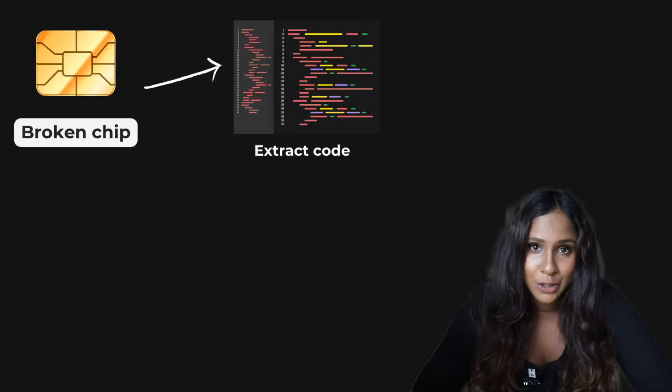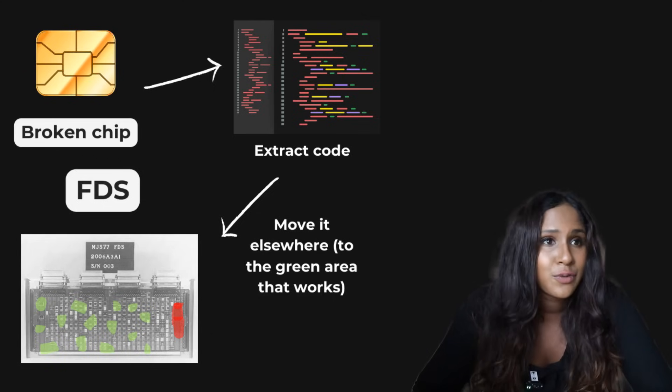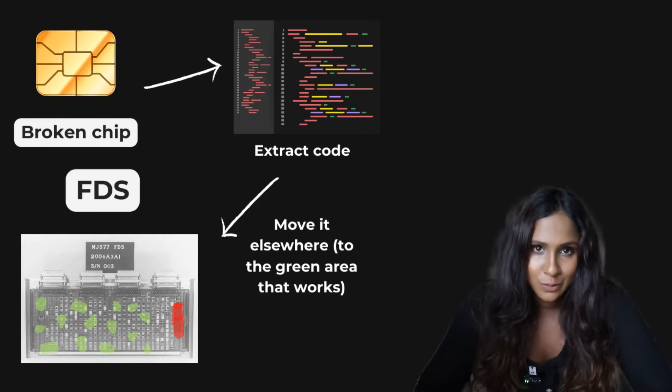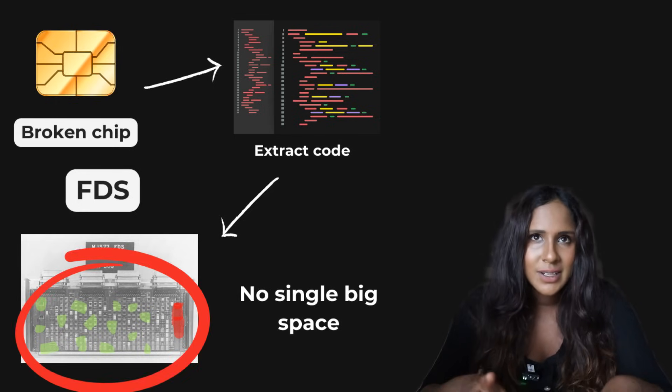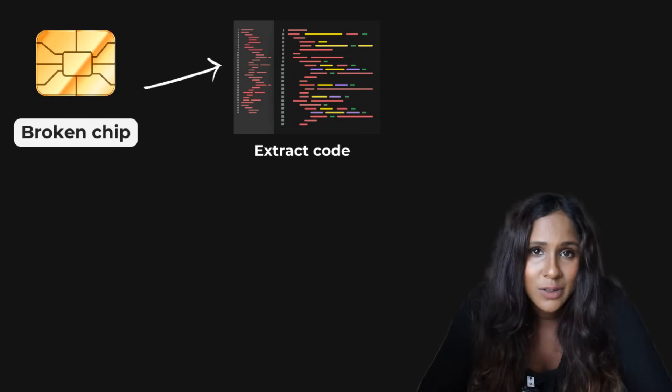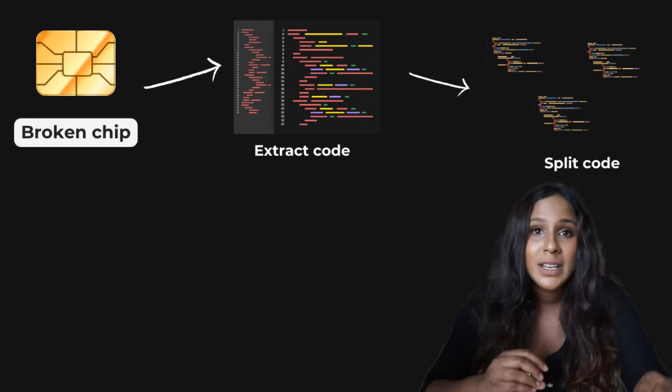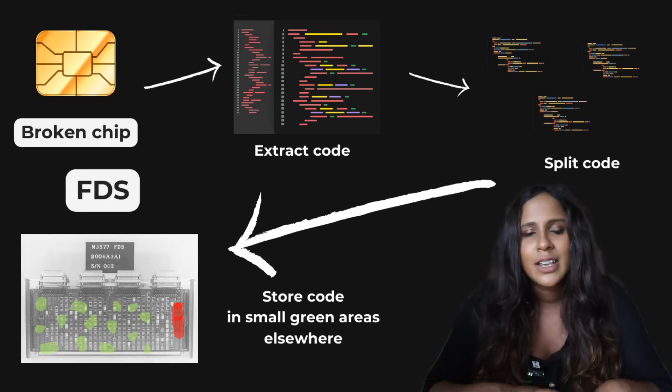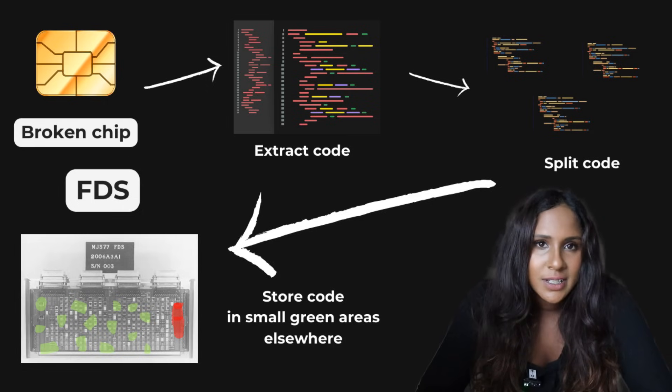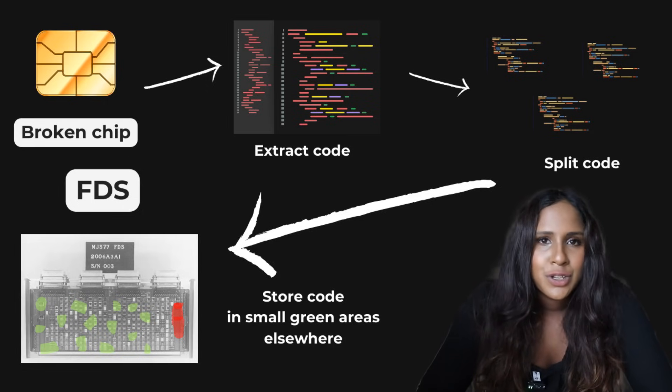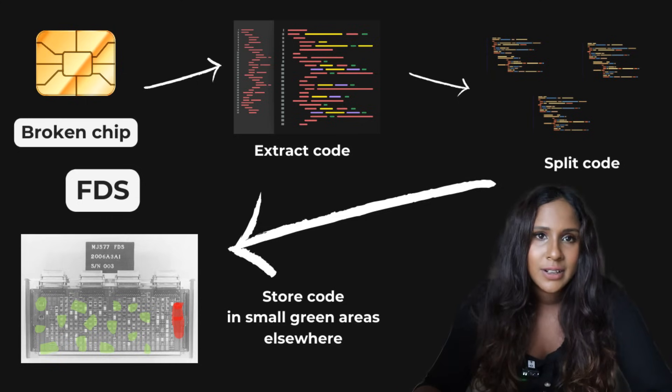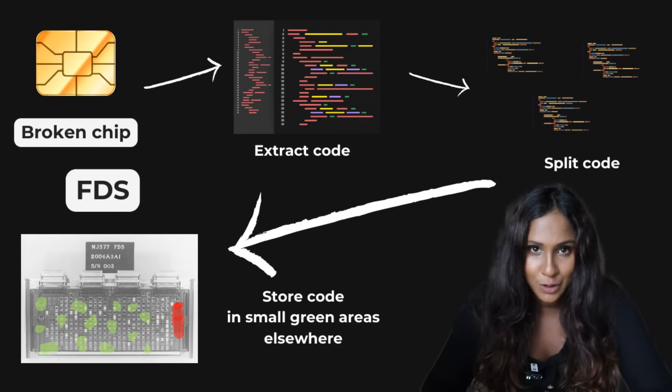First, they relocated the code. So they moved the affected software code to other parts of the flight data subsystem's memory, other parts that were still working. But there wasn't a single empty space big enough to store all of this new code. So what they did was they divided and conquered. They split the code into smaller pieces, and each small piece spoke to one another. And then they stored each small piece in different locations. They also updated other parts of the system and told the system to point to the new location if they needed those specific pieces of code.